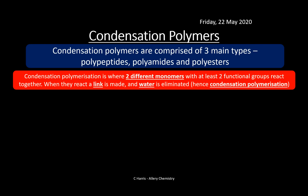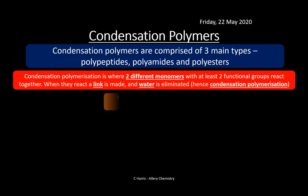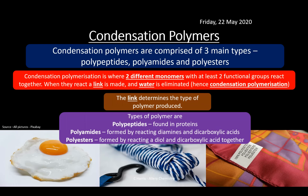The type of link determines what type of polymer is produced. You need to know three types: polypeptides, which are found in proteins; polyamides, formed from diamines and dicarboxylic acids; and polyesters, formed from diols and dicarboxylic acids. In this topic we'll focus on polyamides and polyesters. Polypeptides are covered in the amino acids and proteins topic, including DNA.